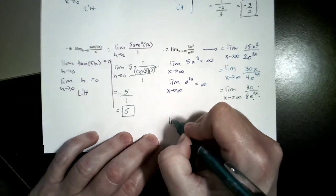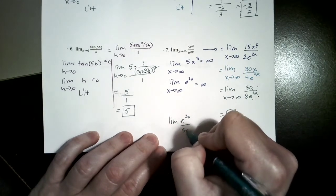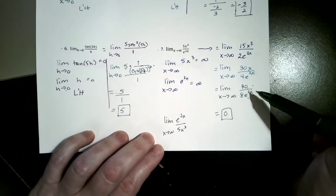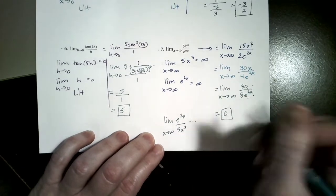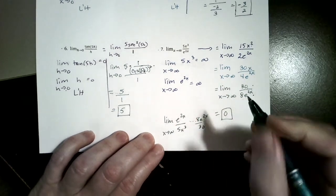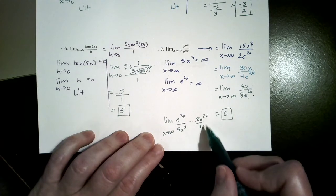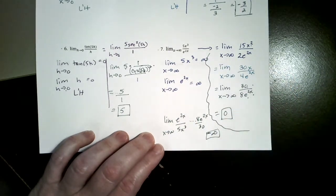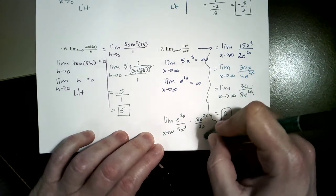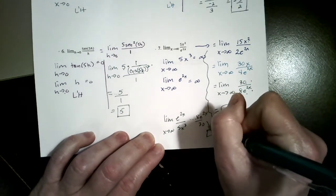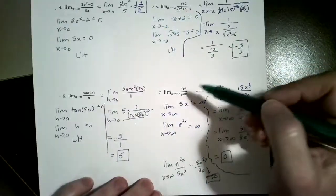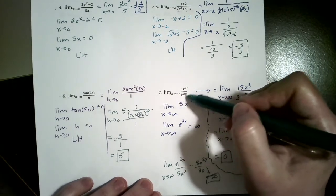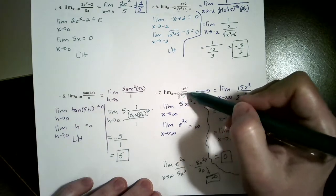If you had it the other way around — the limit of e to the 2x over 5x cubed as x approaches infinity — the same work happens in reverse, and you'd eventually get to 8e to the 2x over 30. A number growing really, really large divided by 30 would be infinity. Remember that exponential functions grow faster than polynomial functions. If you forget, just think about exponential growth — like COVID-19 — it grows really, really fast.